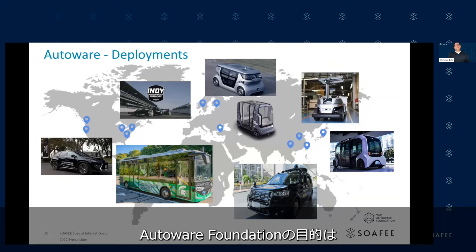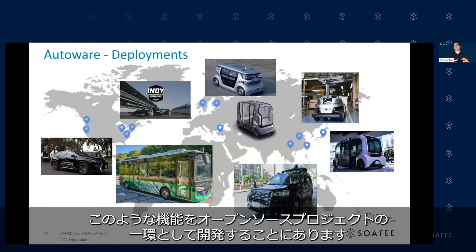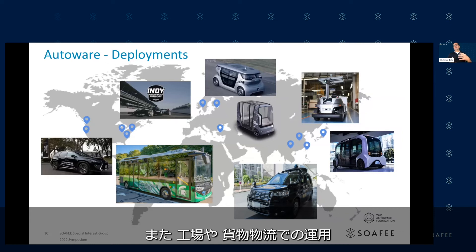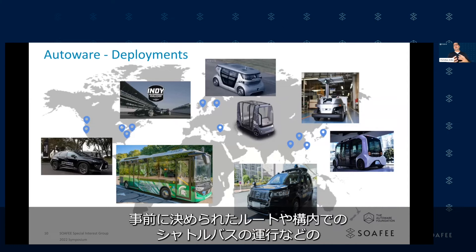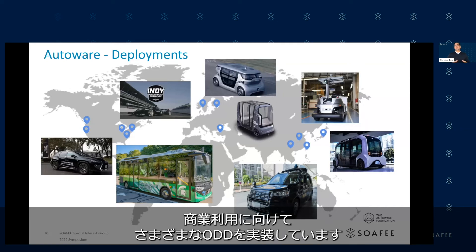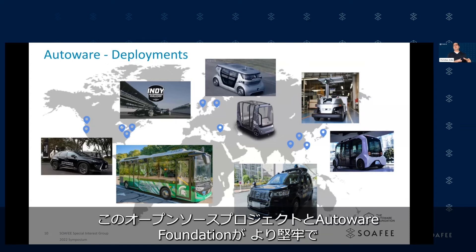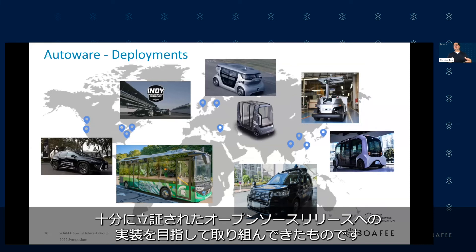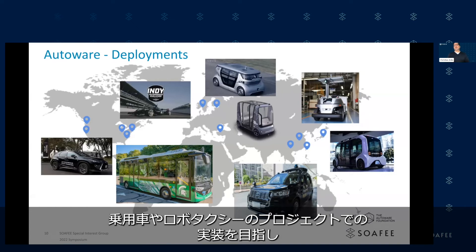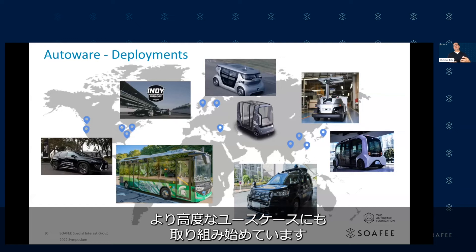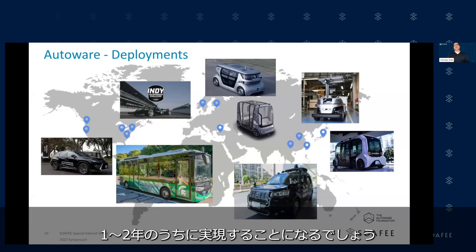The focus of the foundation is really to develop this functionality as part of the open-source project. We've implemented various ODDs at a level of maturity that lends itself toward commercial implementations, such as operating in factory environments, cargo logistics, or shuttle bus applications on predefined routes or private campuses. These are implementations that the open-source project and the foundation have been working on to release in a more robust, well-documented way. We're also starting to work on more advanced use cases around passenger vehicles and robo-taxi type operational design domains, which will be coming in the next one to two years.